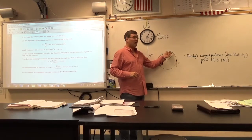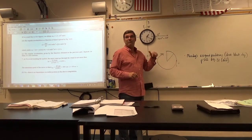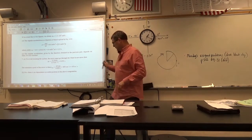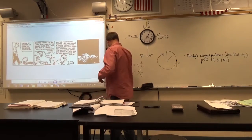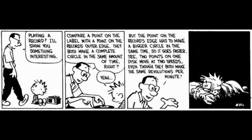It doesn't matter. Why not? Even though there's more space at the edge, the outside of the circle is moving faster. This leads us to the Calvin and Hobbes cartoon. Compare a point on the record label near the center with a point on the record's outer edge — they both make a complete circle in the same amount of time.